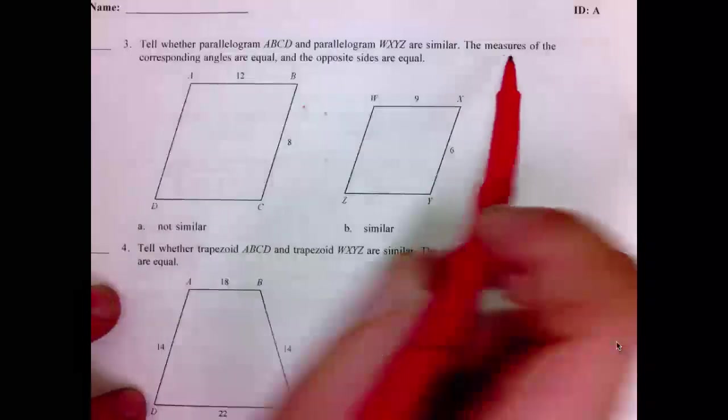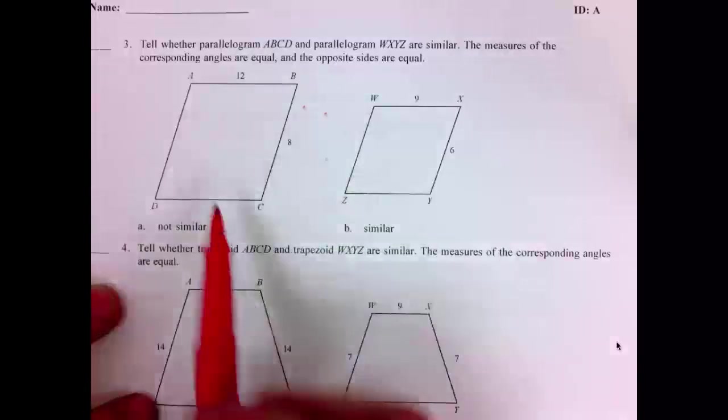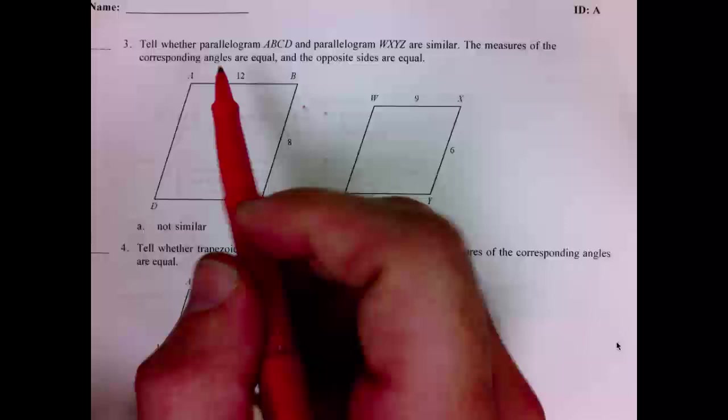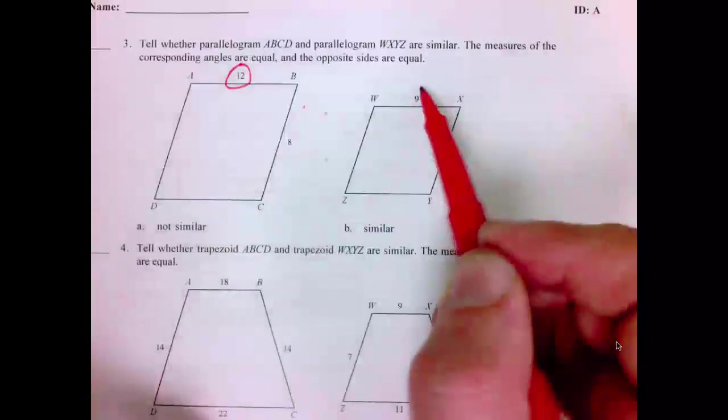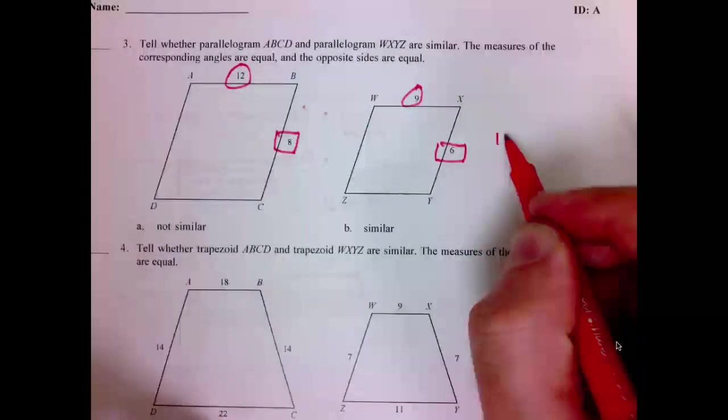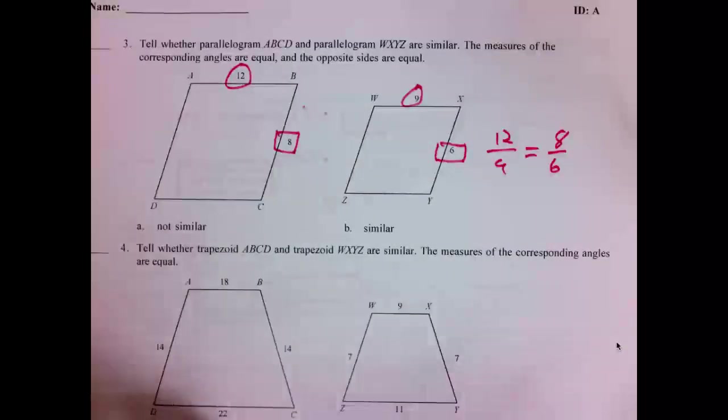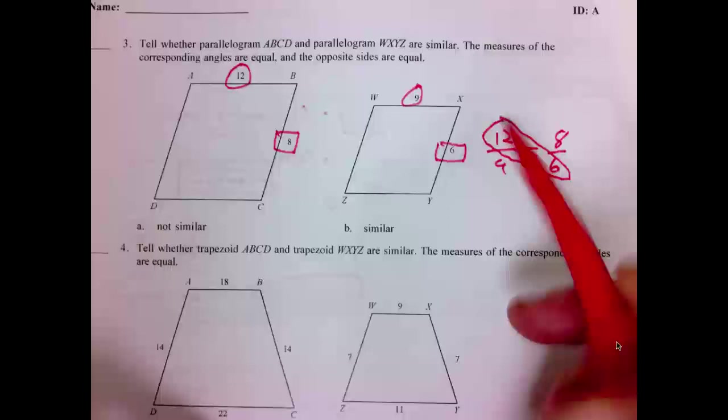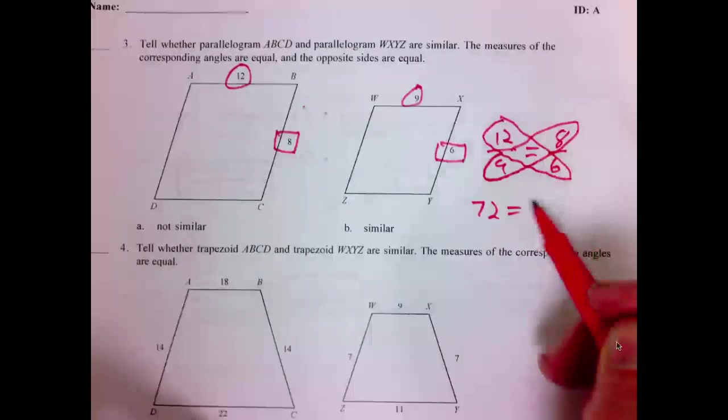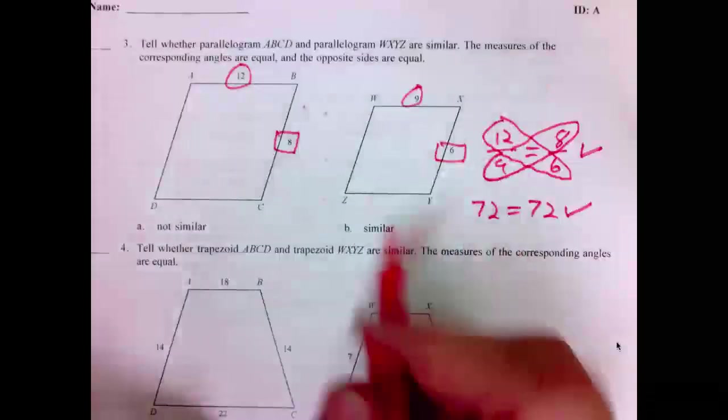We want to tell whether these two are similar. Same situation. We will simply set up a proportion. 12 corresponds with 9. 8 corresponds with 6. 12 over 9 equals 8 over 6. Are those indeed equal? Well, 6 times 12 is 72. 9 times 8 is 72. They are equal. This is true. Thus, these two figures are similar.